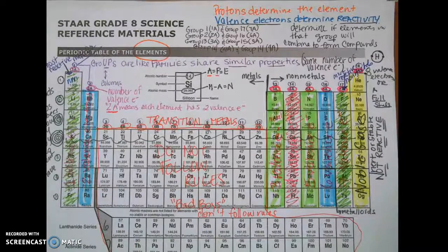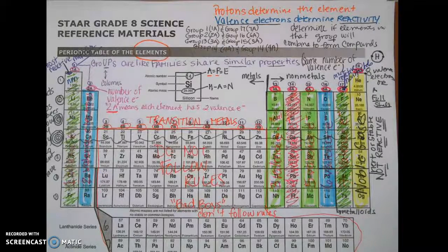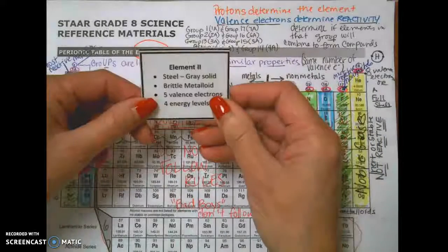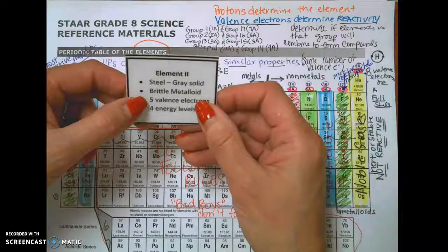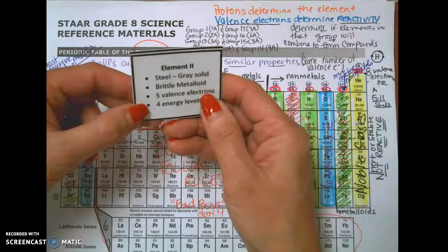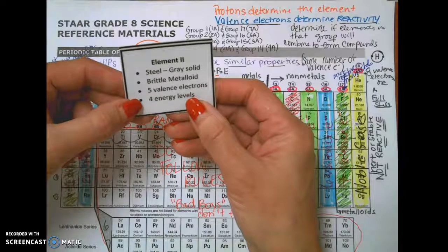Based on all of this, we can answer a couple more questions. The best thing to do is pause the video once I ask the question and then check your answer. So here's element card number 2 — it gives us some clues. The clues are: it's steel-gray, solid — so metallic in color — but it is a brittle metalloid. It has five valence electrons and four energy levels. Pause and see if you can find the element that has five valence electrons and four energy levels.